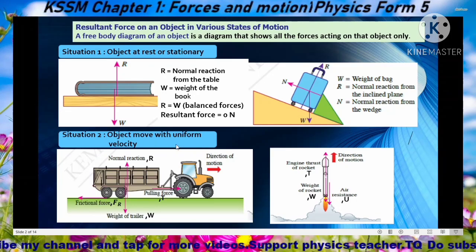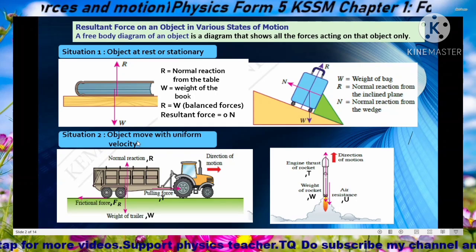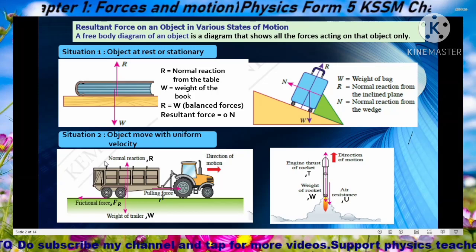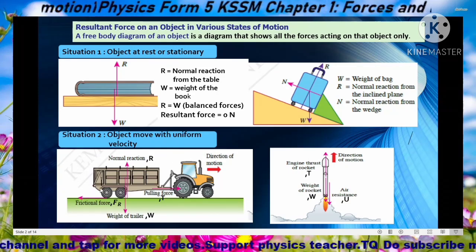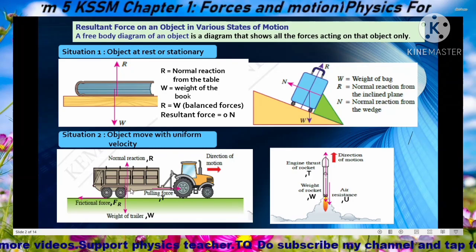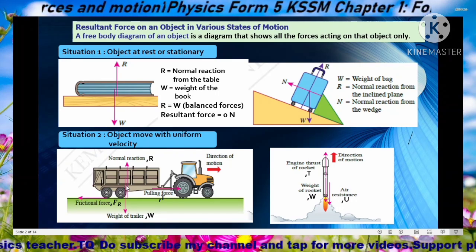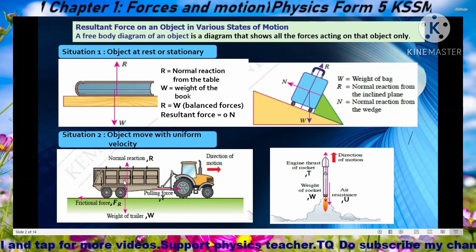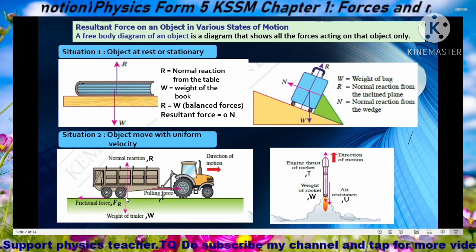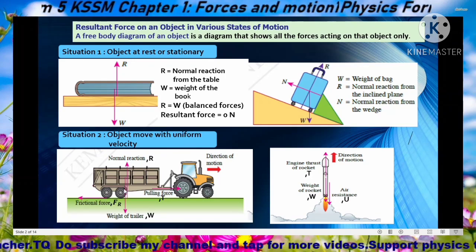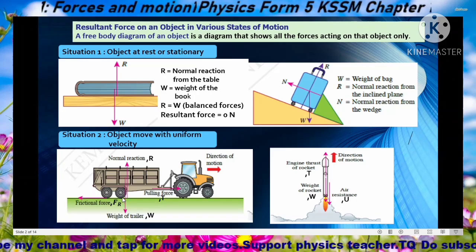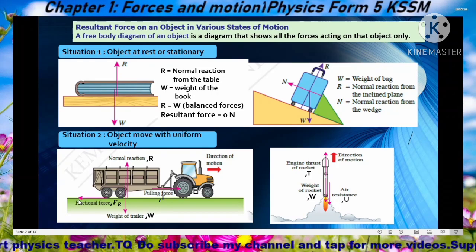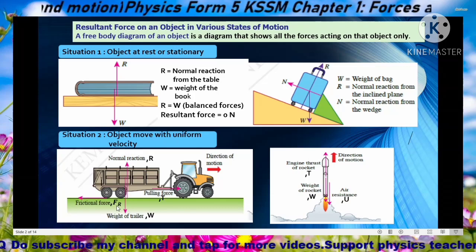Situation 2: object moves with uniform velocity. As discussed before, if an object moves with uniform velocity, acceleration is equal to zero. Here we have a lorry pulling a trailer at the back. We want to mark all the forces acting on the trailer. There is weight W of the trailer downward, and normal reaction force R upwards because the wheel of the trailer is touching the ground.